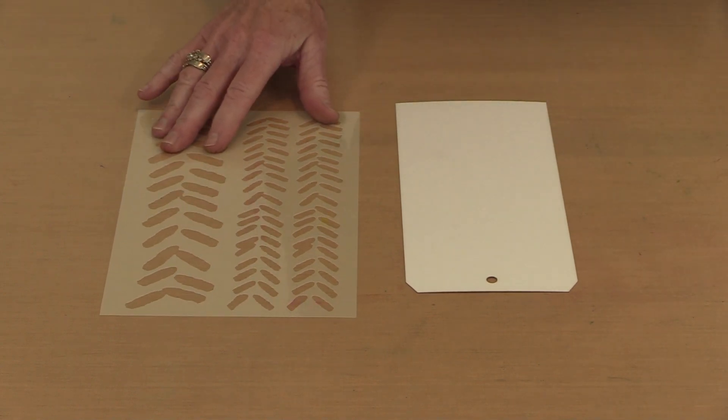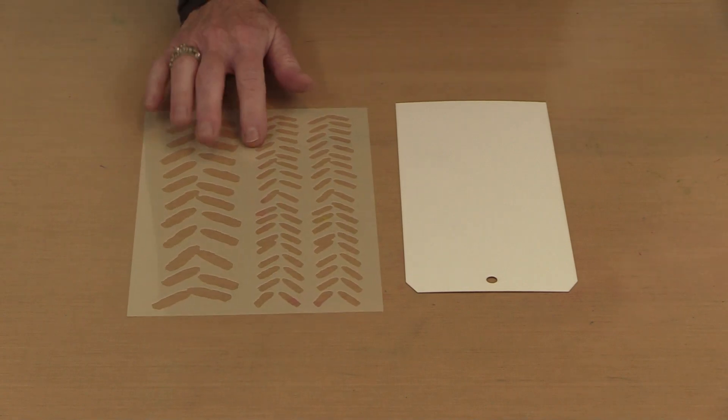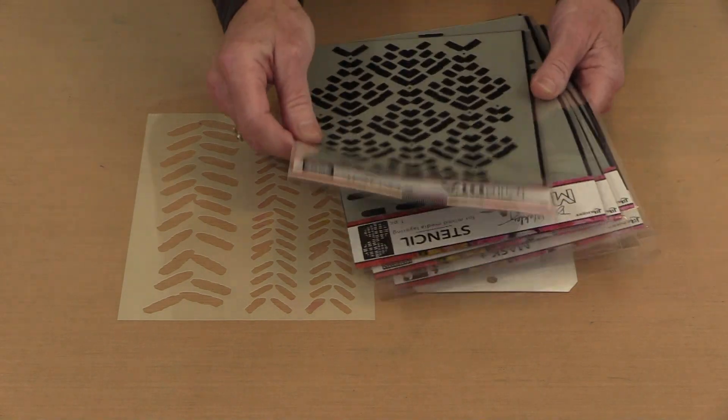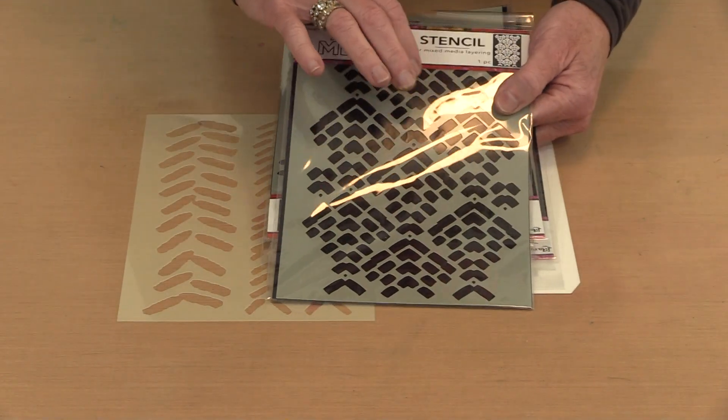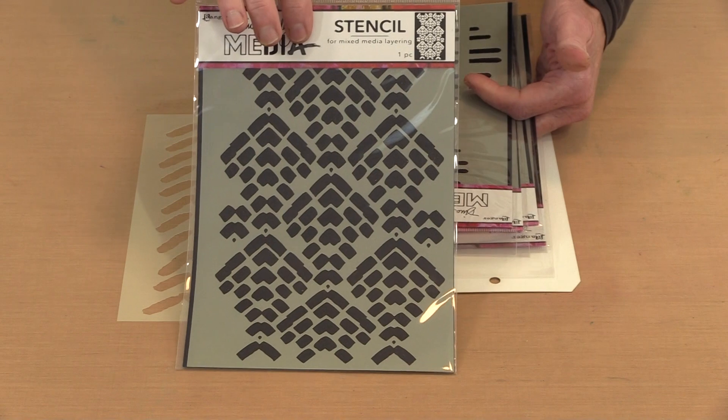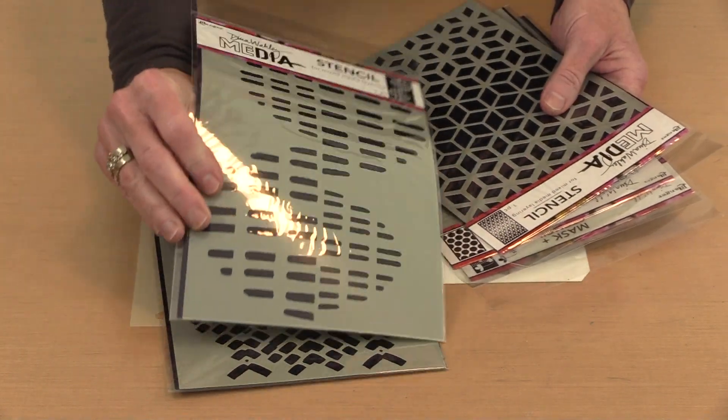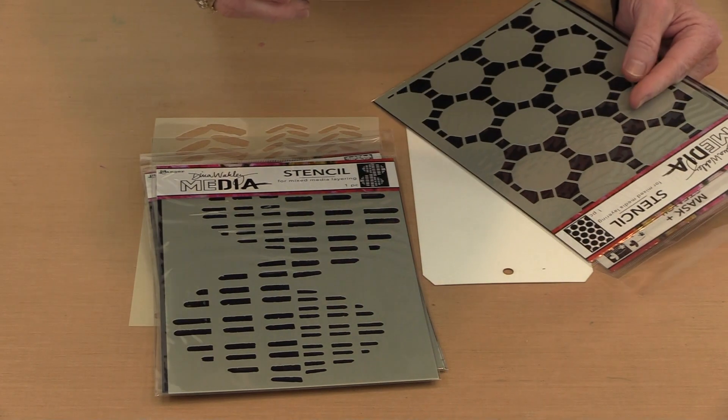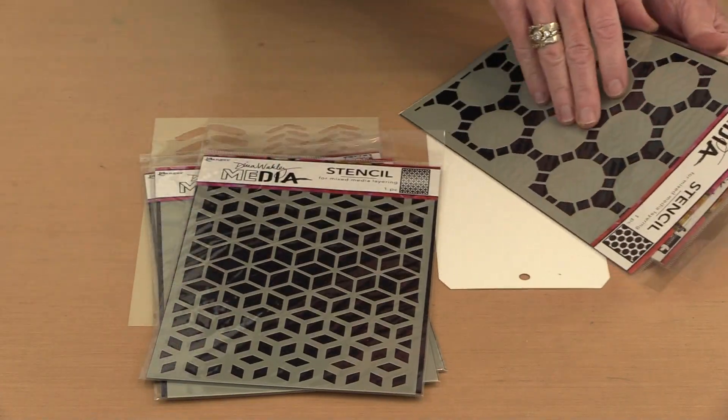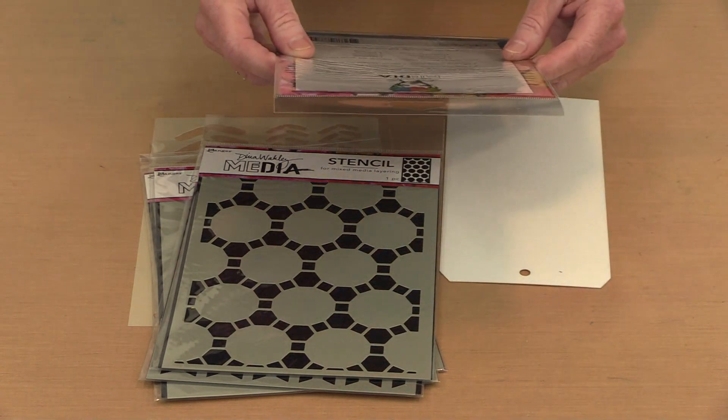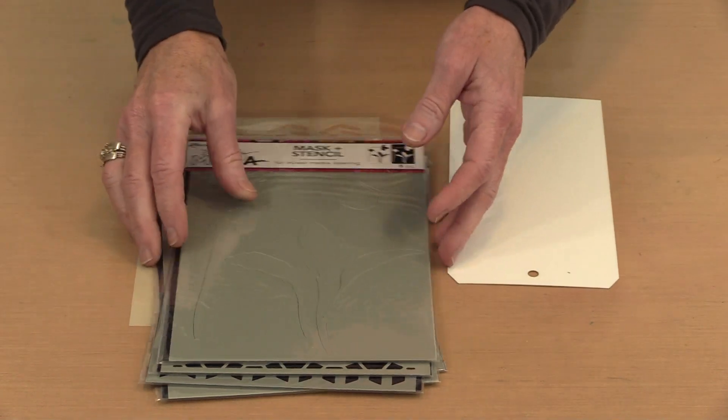This one is named, oh good grief, I put the package someplace and I can't remember it. Assorted brush marks. And then let's turn these toward you. This one is named Mosaic Cobblestone. This one is named Pieces. This one is Cubed. Here we have Connected Dots. And then finally this is a stencil mask combo. It's named Sprouts.